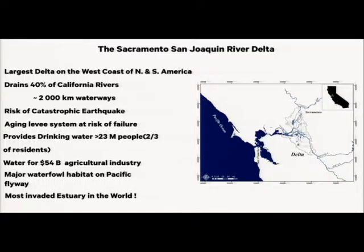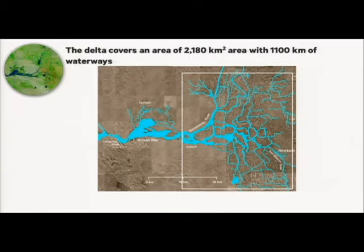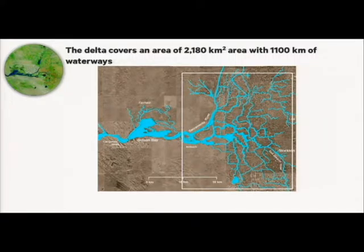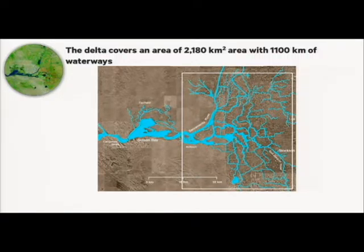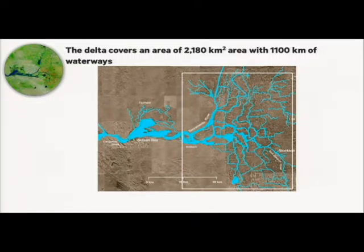Why do we care about the Delta? It's the largest delta on the West Coast of North and South America. It has over 2,000 kilometers of waterways and is at risk of catastrophic failure from earthquakes, with an aging levee infrastructure. Yet we're dependent on it for about two-thirds of the water supply for California. It's been identified as the most invaded estuary in the world. The area we've concentrated on is roughly east of San Francisco Bay, including most of the legal Delta.